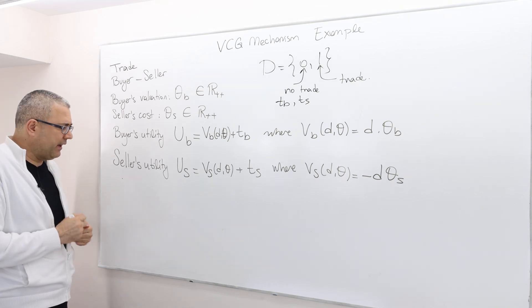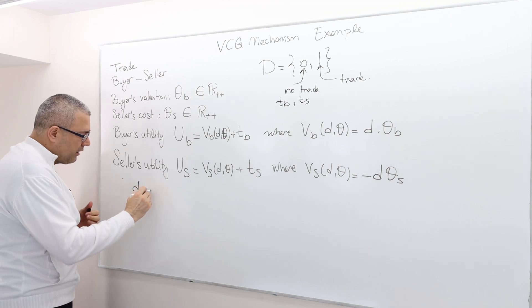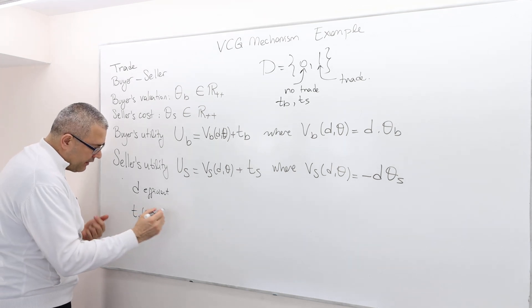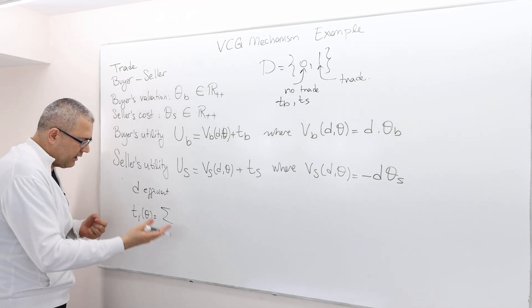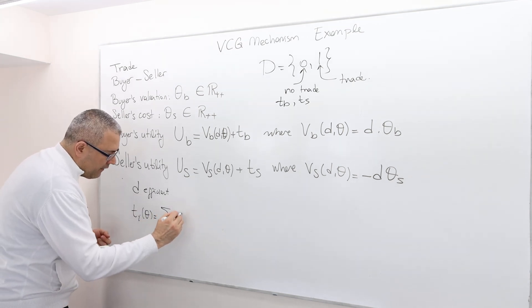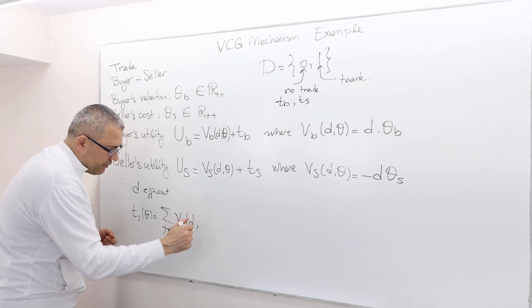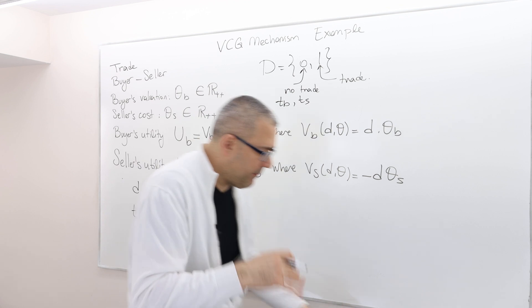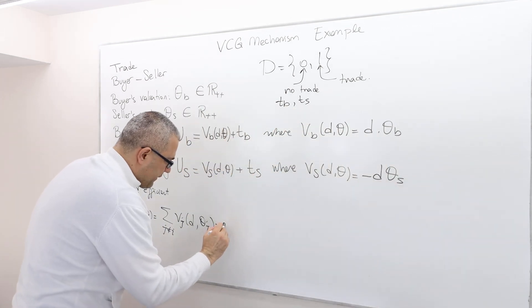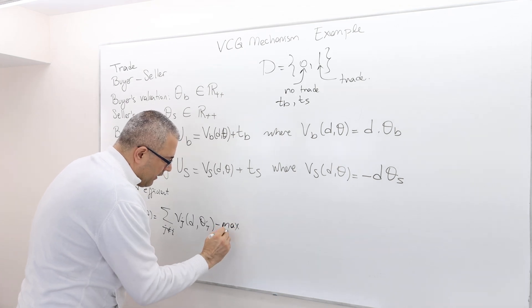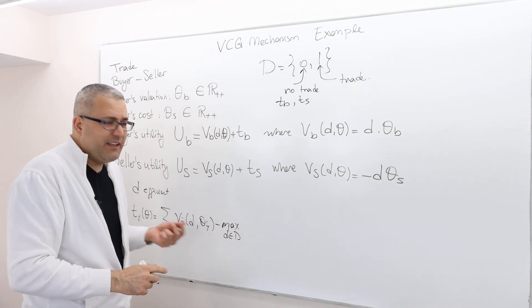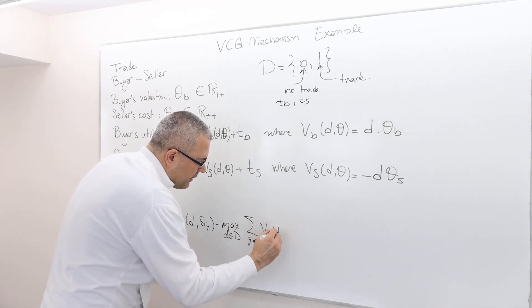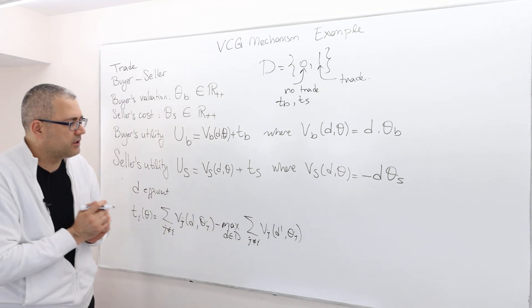The VCG mechanism has an efficient decision rule D and a transfer function T_i(Θ), which is defined as: the sum over all j not equal to i of V_j evaluated at the efficient decision rule D* and type θj, minus the maximum over D′ in the decision set of the sum over j not equal to i of V_j(D′, θj). Here D′ is either 0 or 1.